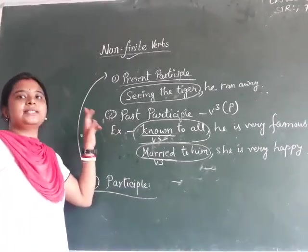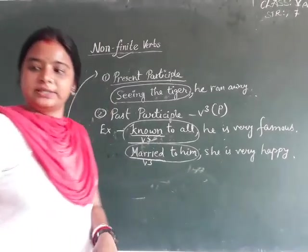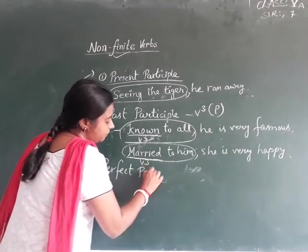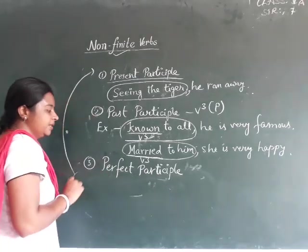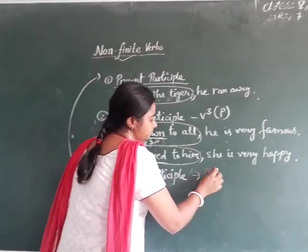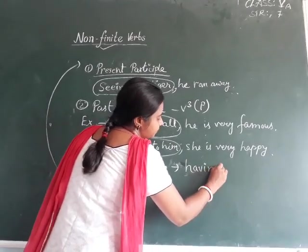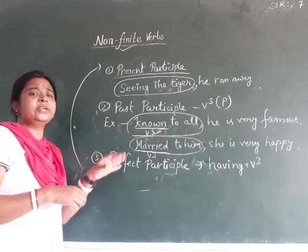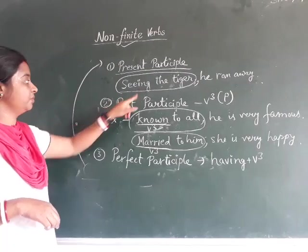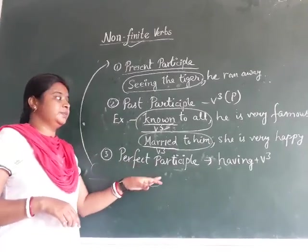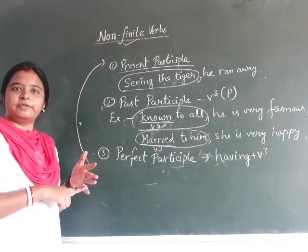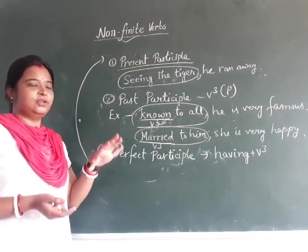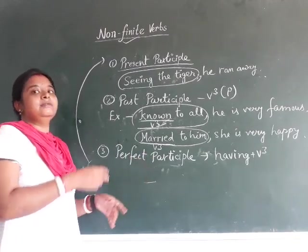This also comes in past participle. Now we will go with the third and last one — that is perfect participle. Perfect participle includes 'having plus V3.' There is a trick to remember this: present participle uses ing forms; past participle uses V3 plus passive voice; and perfect participle starts with 'having plus V3.' Like in present perfect or past perfect tense, you already use 'have' or 'has' forms — the same technique you have to use here also. Perfect participle starts with 'having plus V3.'